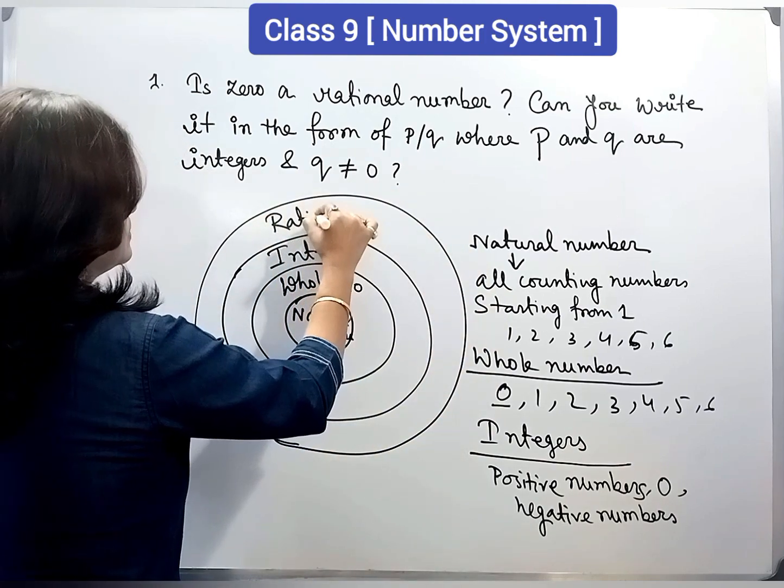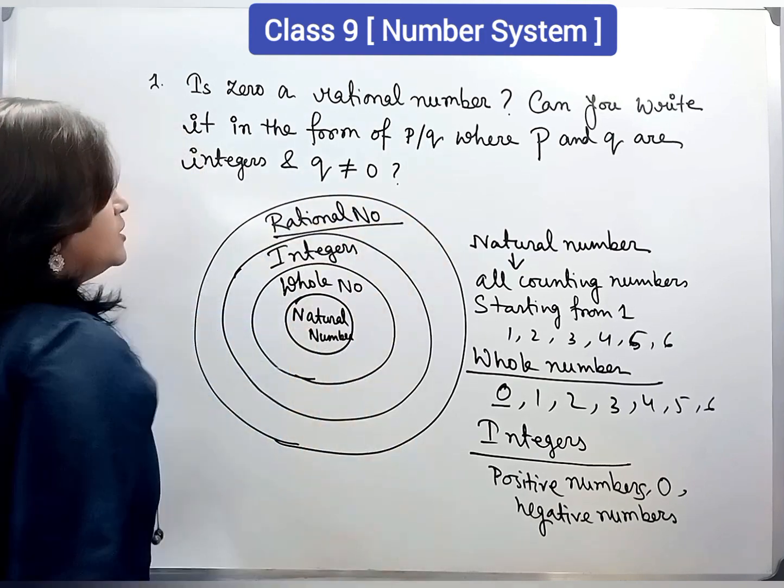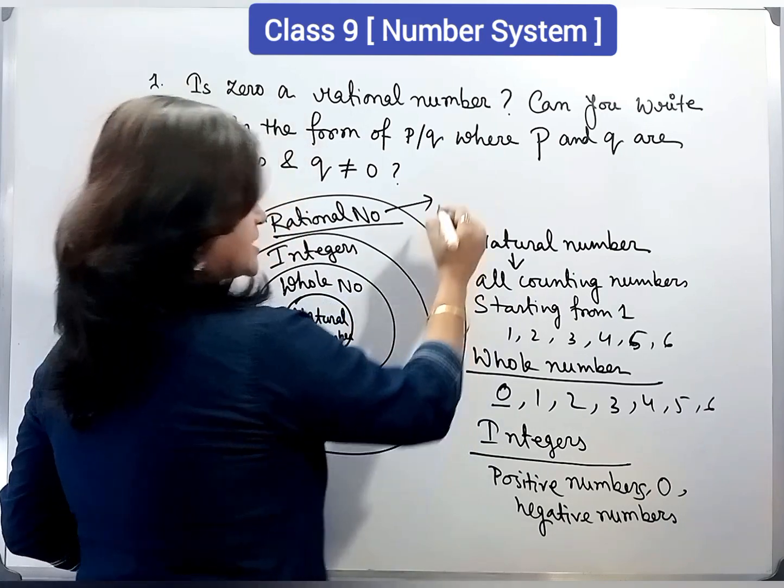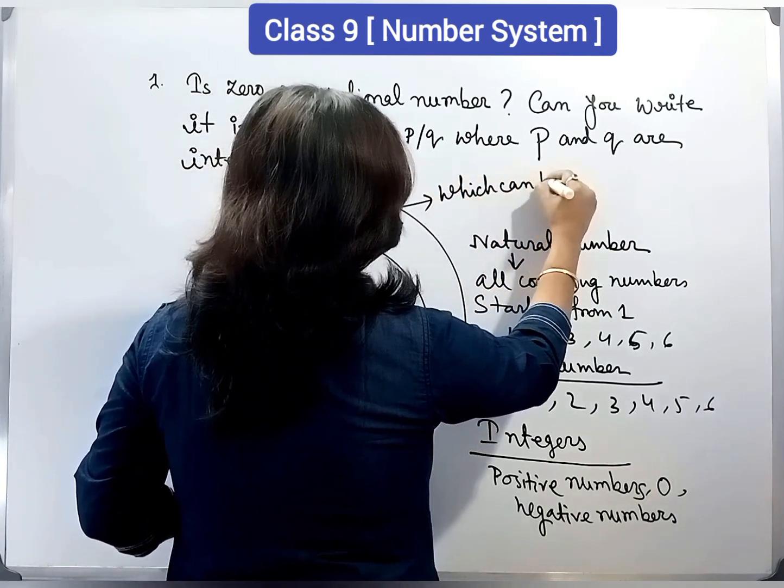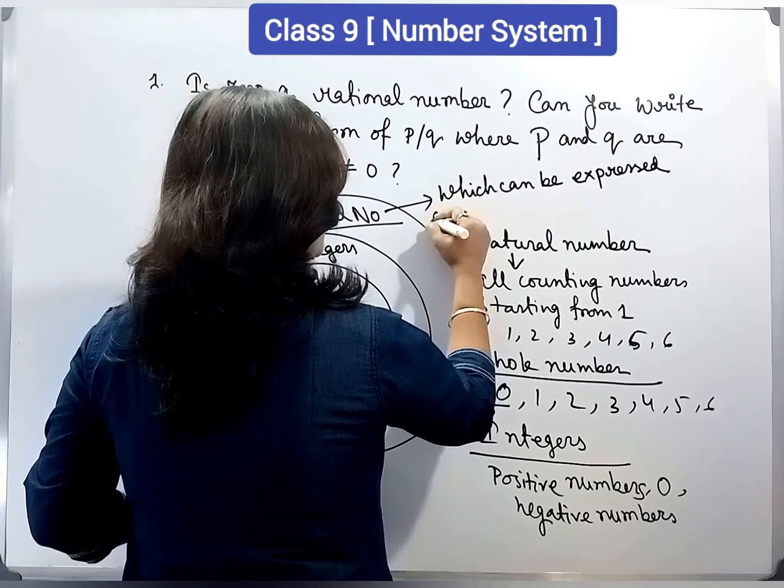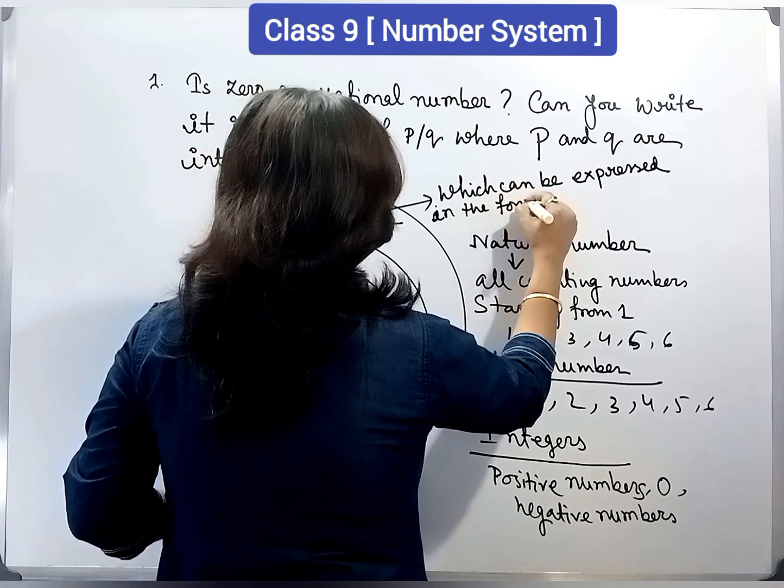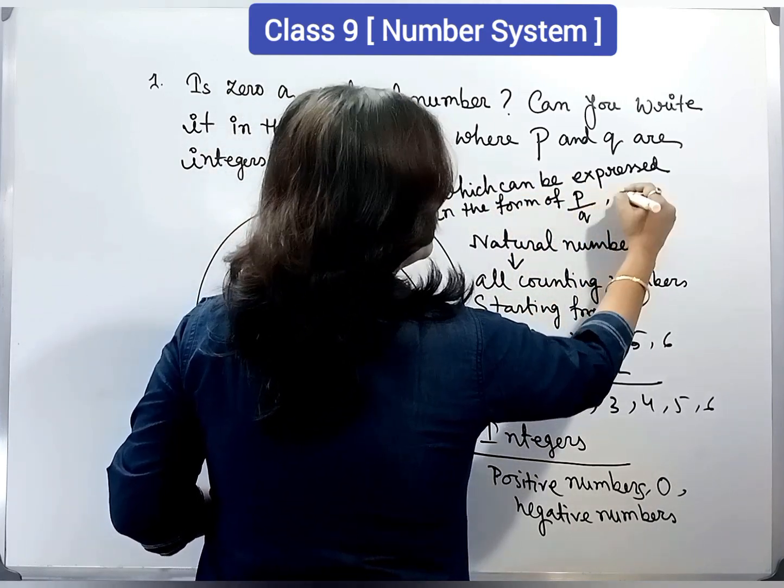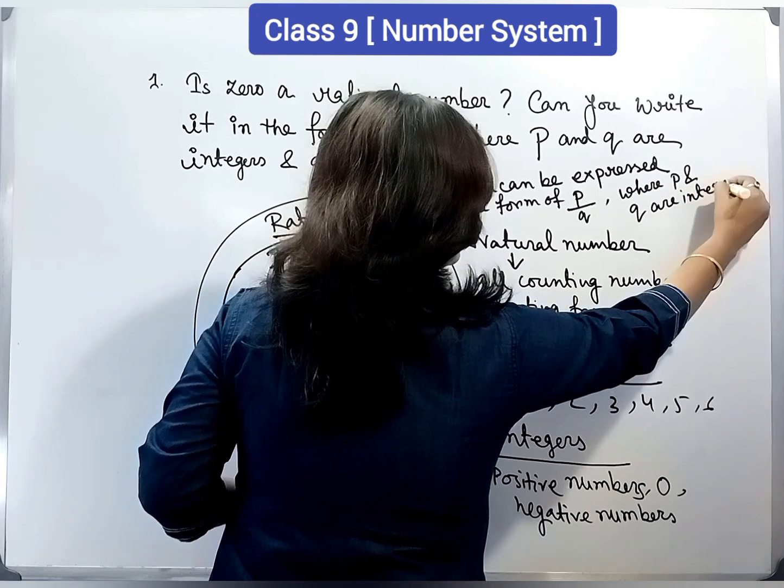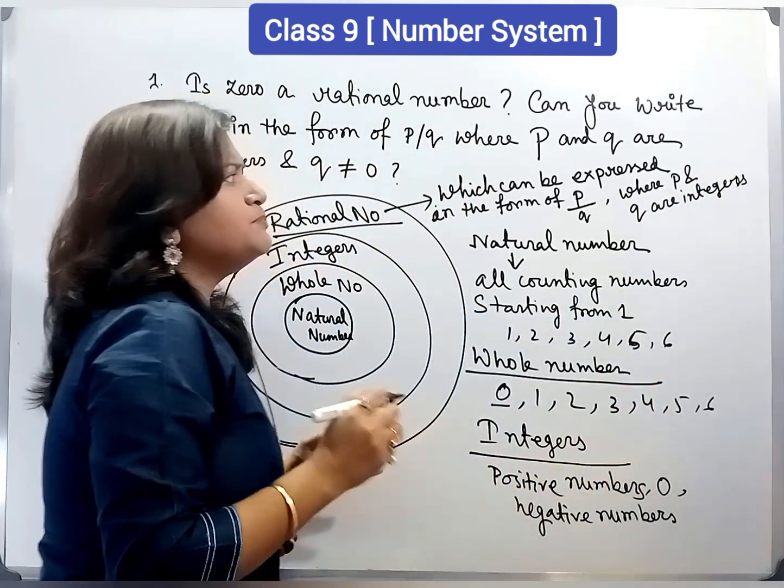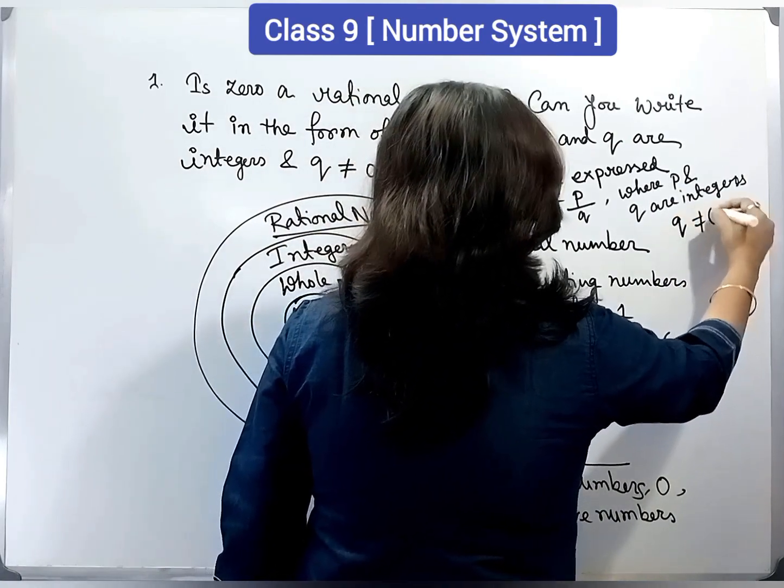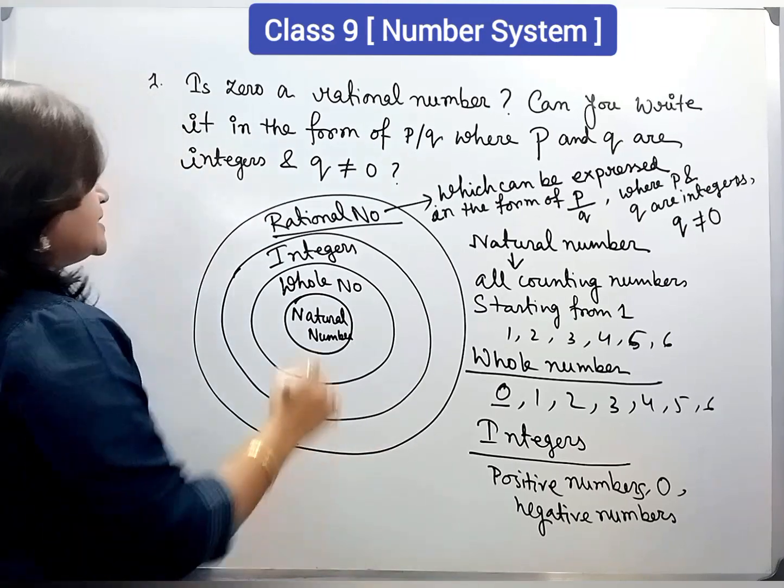Now, what is rational number? Already you have learnt this in class 8. So, rational number is a number which can be expressed in the form of p by q, where p and q are integers. That means, p and q can be positive number as well as negative number. And q not equal to 0. These numbers are called rational number.